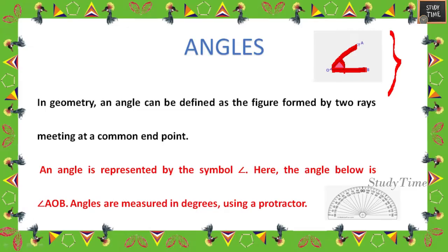An angle is represented by the symbol ∠. Here we say angle AOB, meaning you are finding the angle of O with respect to A and B. Angles are measured in degrees using a protractor — this is a protractor, and using this you will be measuring an angle.